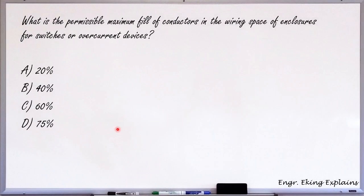Okay, so what is the permissible maximum fill of conductors in wiring space of enclosure for switches and overcurrent devices?